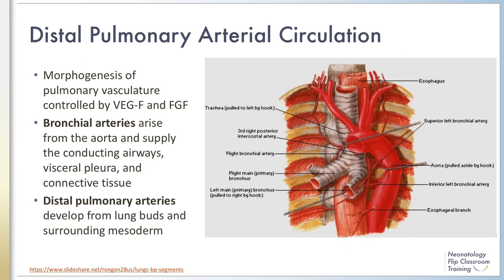Pulmonary vascular morphogenesis is controlled by vascular endothelial growth factor, or VEGF, and fibroblast growth factor. The bronchial arteries arise from the aorta and supply the conducting airways, visceral pleura, and connective tissue with oxygenated blood.